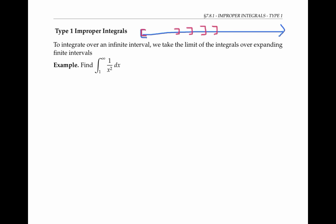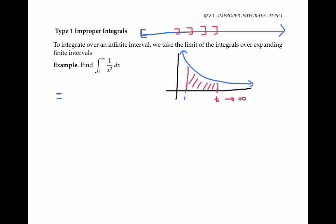For example, to find the integral from one to infinity of one over x squared dx, we'll evaluate the integral from one to some finite number t, and then take the limit as t goes to infinity. In symbols, we write the limit as t goes to infinity of the integral from one to t of one over x squared dx. Since one over x squared is the same as x to the minus two, we can integrate it to get negative x to the minus one, evaluated between one and t, and then take that limit.